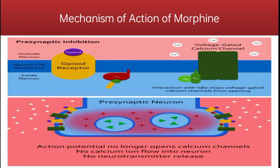Let us discuss the mechanism of action of morphine. Morphine shows its action by two processes: presynaptic inhibition and postsynaptic inhibition. In presynaptic inhibition, opioids bind to opioid receptors on the presynaptic neuron terminals. The G-β-gamma subunit is released and interacts with nearby voltage-gated calcium channels, preventing them from opening. Even when there is an action potential, these channels can no longer open — without calcium influx, no neurotransmitter is released.